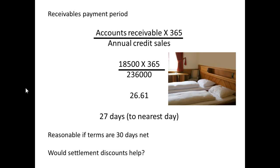So the receivables payment period: accounts receivable times 365 over annual credit sales is 18,500 over 236,000 multiplied by 365, which comes to 26.61, or 27 days to the nearest day. This seems just about reasonable if the terms are 30 days net — the vast majority of customers are probably paying just within that 30-day period. But we might ask whether we're offering early settlement discounts and if not, would these help?